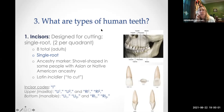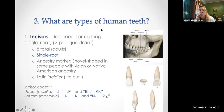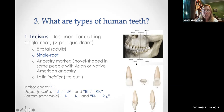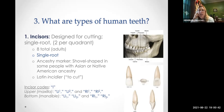Incisors are the first type of tooth in each quadrant of the mouth. They are designed for cutting and have one root. Adults have a total of eight incisors — four on top, four on the bottom, two in each quadrant. Some people may have a little shovel or spoon shape on the tongue side of the incisor, called shovel-shaped incisors, which may indicate Asian or Native American ancestry. Incisors come from the Latin 'incidere,' meaning to cut.